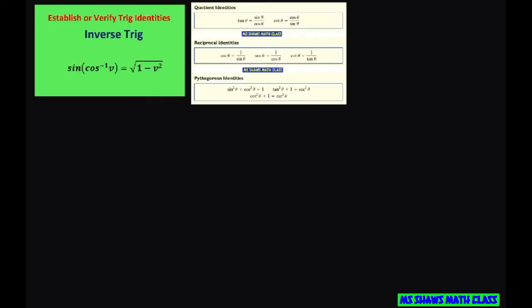We're going to deal with the inner function here first. Get rid of that inverse cosine. So I'm going to let alpha equal inverse cosine of v and then rearrange this as cosine of alpha equals v.